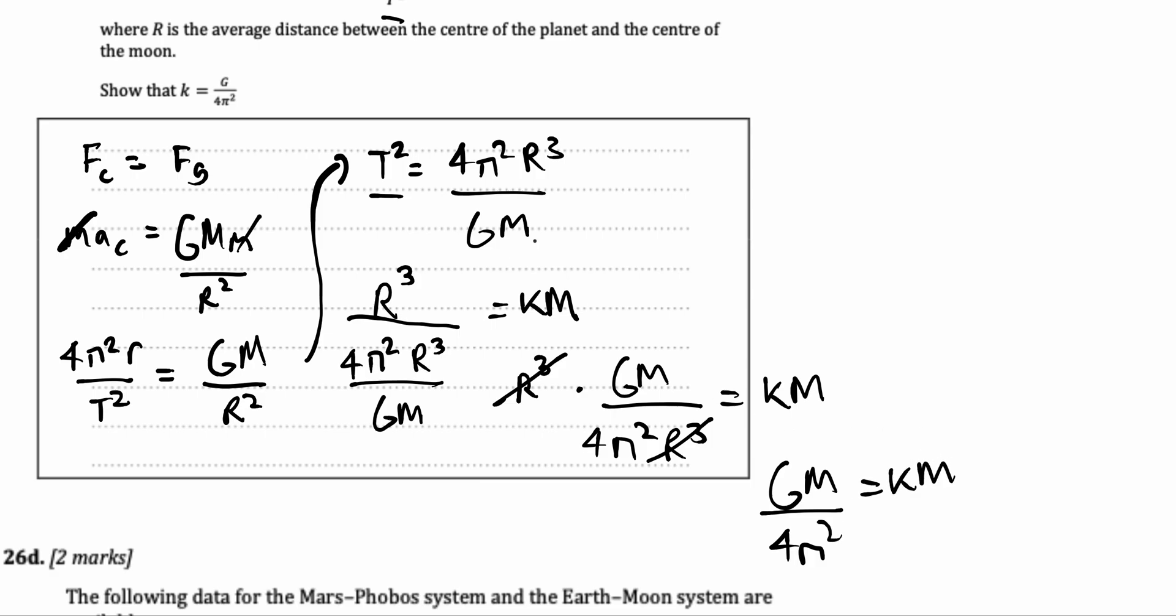But that's not what we want to prove. We want to prove that k is equal to g over 4pi square. m and m cancel. Hence, k is equal to g over 4pi square. And we've proved the statement.